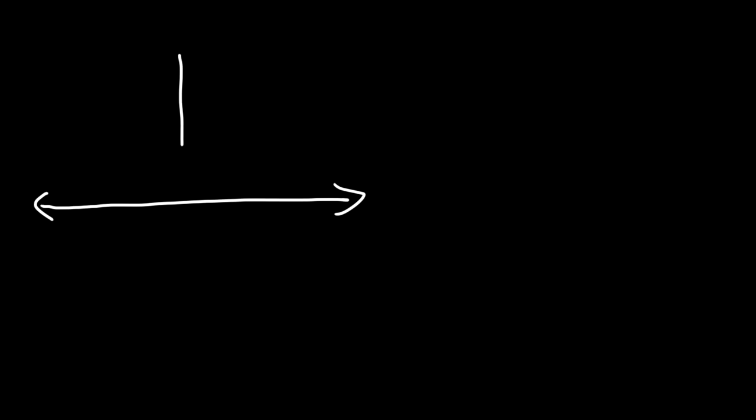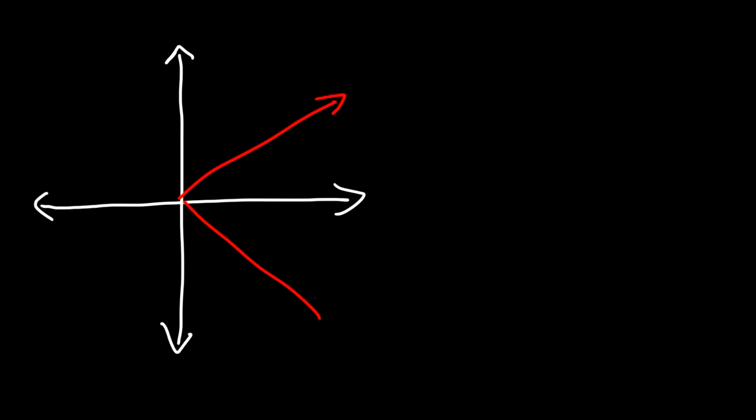Let's consider one more example. Is this graph a function? We can see that it does not pass the vertical line test — it touches at two points. So now you know how to tell if a graph represents a function using the vertical line test.